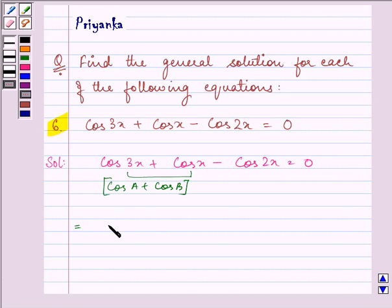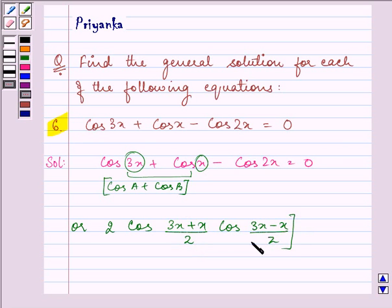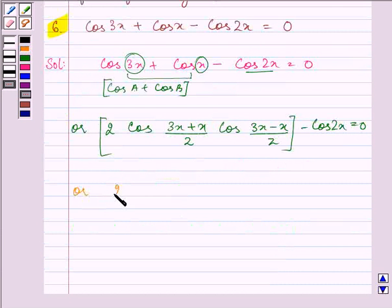It is 2 cos a plus b by 2. Here a is 3x and b is x. We have 3x plus x by 2 cos 3x minus x by 2 and we have minus cos 2x is equal to 0. Let us solve it. We have 2 cos 3x plus x is 4x, 4x divided by 2 which is 2x cos x minus cos 2x is equal to 0.